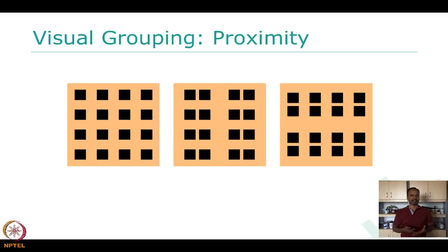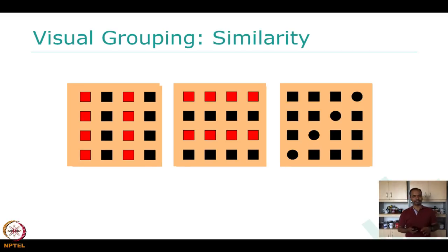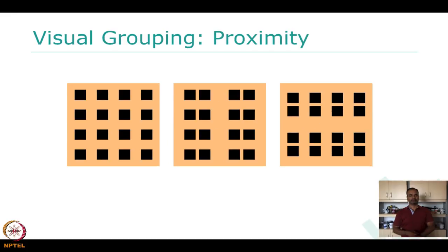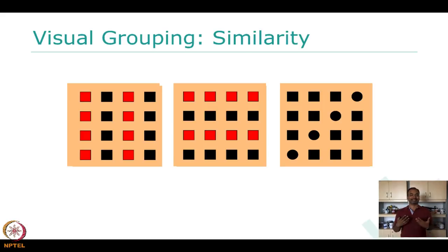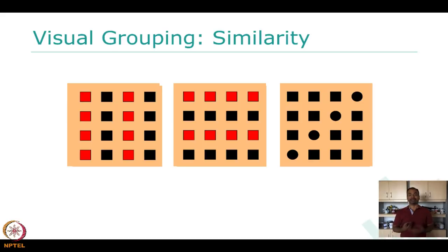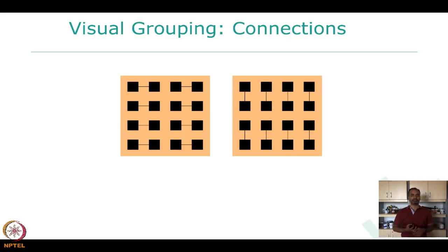Another type of visual grouping is similarity. For example, making the first and third columns red conveys they belong to the same grouping. The second example shows horizontal similarity, and the third uses circles arranged diagonally to show similar values. There is also visual grouping with connections — drawing a line between related elements — which can also overlap with proximity-based grouping.